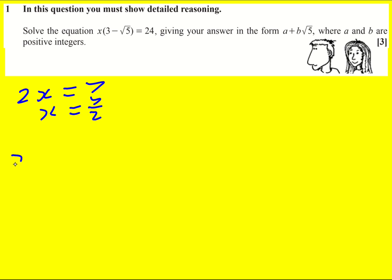So here I need to divide by what's multiplying the x. I need to divide 24 by 3 minus root 5. So it becomes 24 over 3 minus root 5.